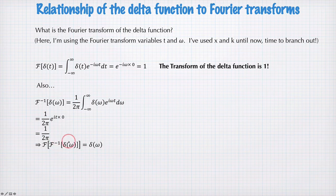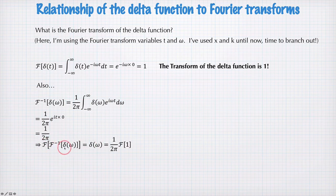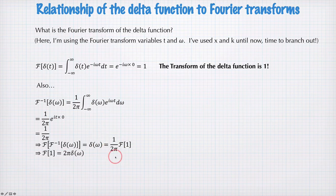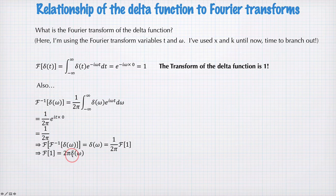But this part here, the inverse transform of delta omega is equal to one on two pi. So this expression here must also be equal to the Fourier transform of one on two pi, which is equal to one on two pi times the Fourier transform of one. And that means this equation here tells us the Fourier transform of one is two pi delta omega.